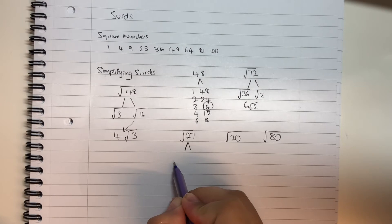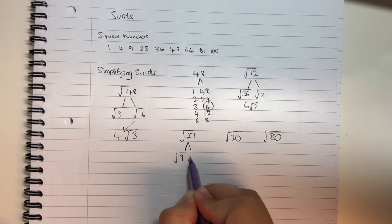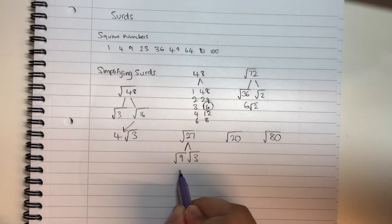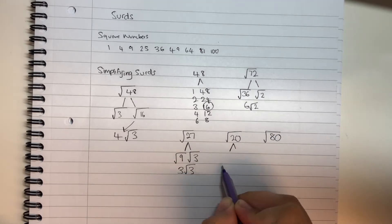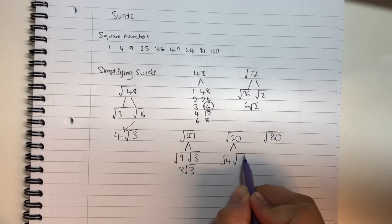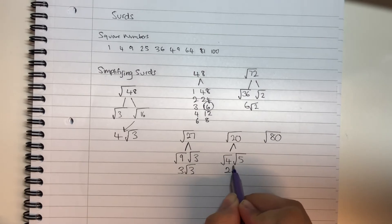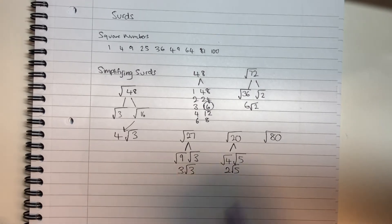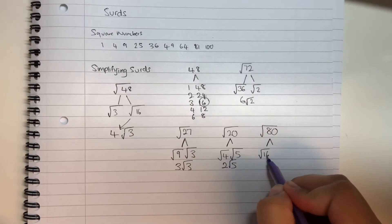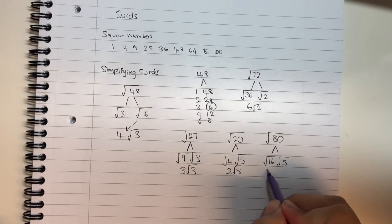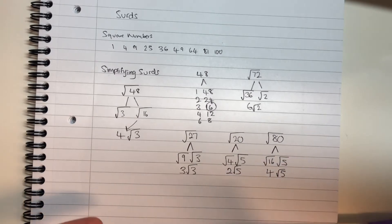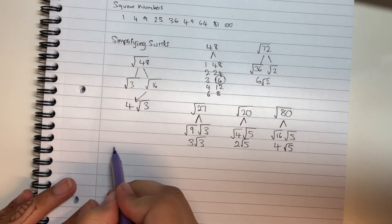The biggest square number that goes into 27 is 9. So 27 divided by 9 gives 3, and root 9 simplifies to 3, leaving 3 root 3. For root 20, the biggest square number is 4. 20 divided by 4 gives 5, and root 4 simplifies to 2, leaving 2 root 5. For root 80, the biggest square number is 16. 80 divided by 16 gives 5, and root 16 simplifies to 4, leaving 4 root 5.